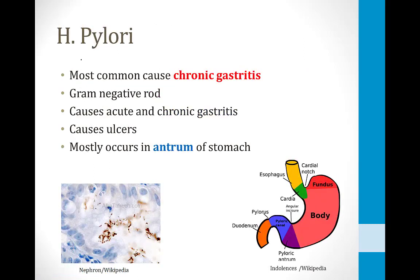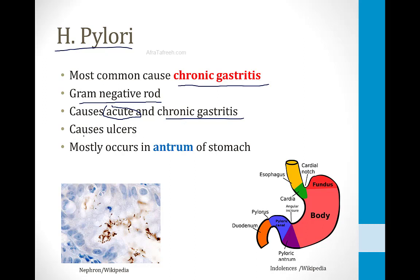Type B chronic gastritis is caused by the bacteria Helicobacter pylori, the most common cause of chronic gastritis — far more common than the autoimmune type. H. pylori is a gram-negative rod that can cause both acute and chronic gastritis. It also causes ulcers and mostly occurs in the antrum of the stomach, which differentiates it from the autoimmune form that affects the fundus and body.